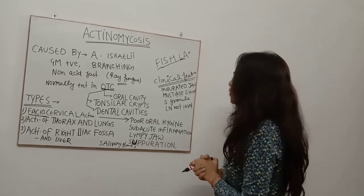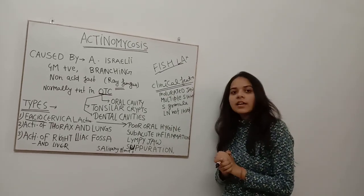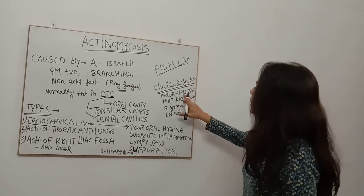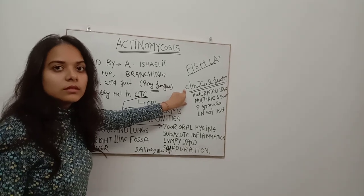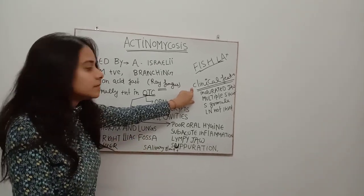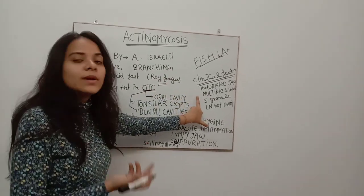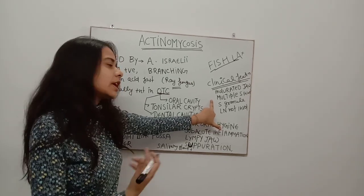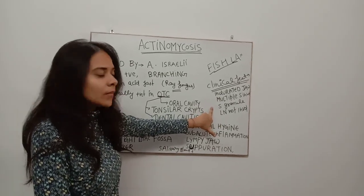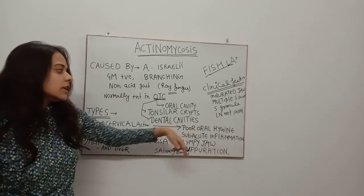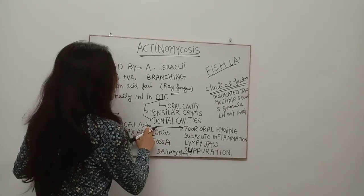Now let's discuss the clinical features of Fascio-cervical Actinomycosis. Number one is 'lumpy jaw' — the jaw becomes very hard, as hard as bone. The second feature is the formation of multiple sinuses. In chronic or old cases, there is secretion of sulfur granules and redness. An important point: lymph nodes are NOT involved in Fascio-cervical Actinomycosis.